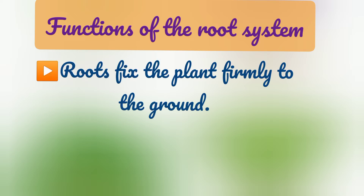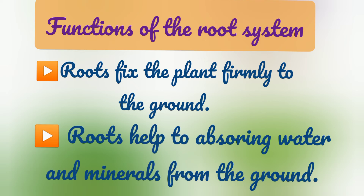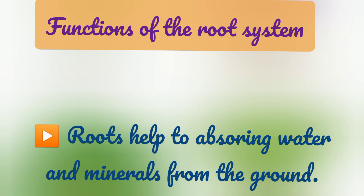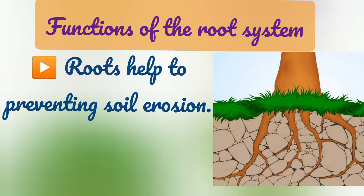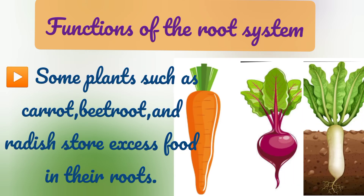Let's see the functions of the root system. First, roots fix the plant firmly to the ground. Then, roots help to absorb water and minerals from the ground. Then, roots help to prevent soil erosion. Some plants such as carrot, beetroot, and radish store excess food in their roots.